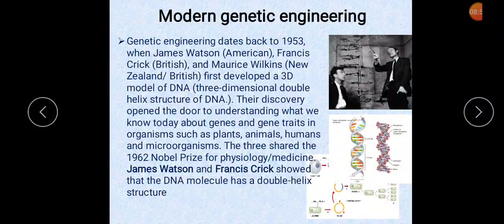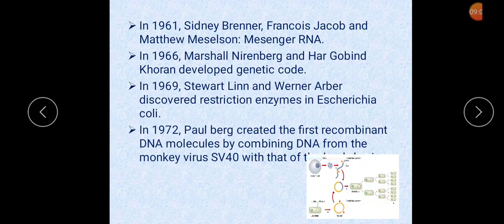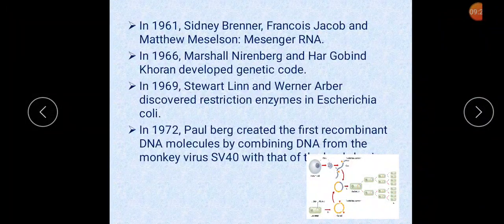Watson, Crick and Wilkins shared the 1962 Nobel Prize for Physiology and Medicine for showing that the DNA molecule has a double helix structure. In 1961, Sidney Brenner, François Jacob, and Matthew Meselson discovered messenger RNA. In 1966, Marshall Nirenberg and Hargobind Khurana developed the genetic code. In 1969, Stewart Lynn and Werner Arber discovered restriction enzymes in Escherichia coli.